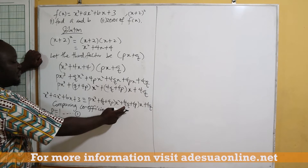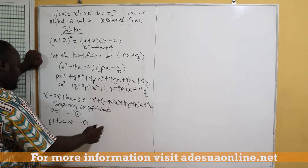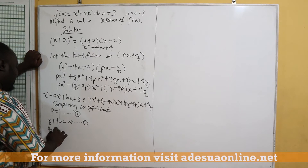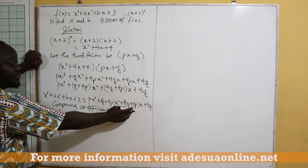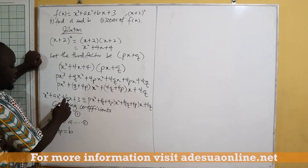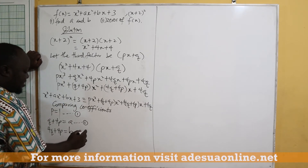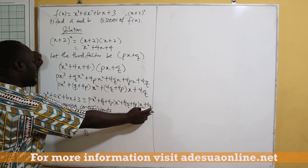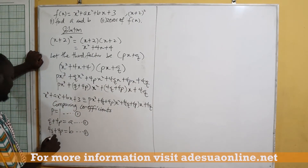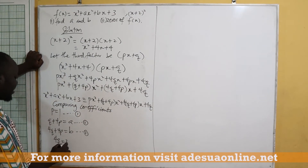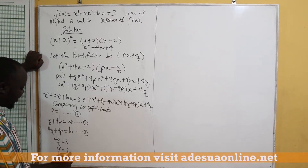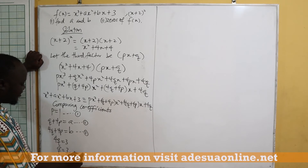Then 4q plus 4p is the coefficient of x, which equals b — equation 3. And the constant term: 4q is equal to 3 — equation 4. From equation 4, q is equal to 3 over 4. So we have now solved for p equals 1 and q equals 3 over 4.